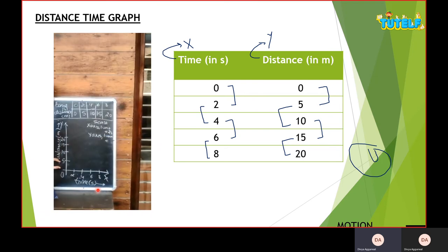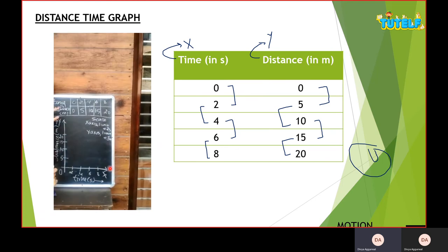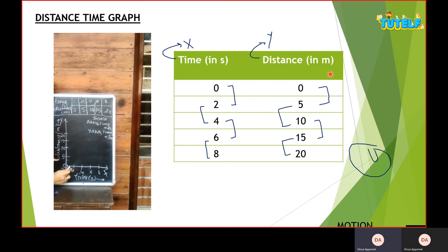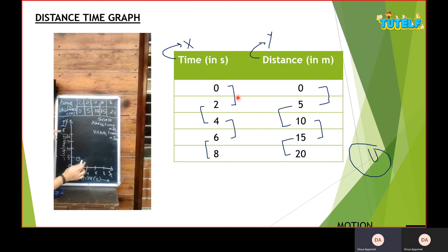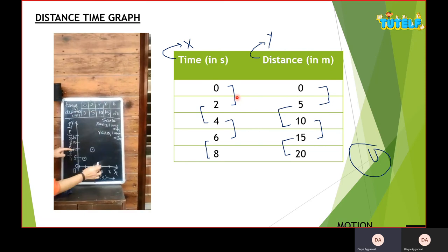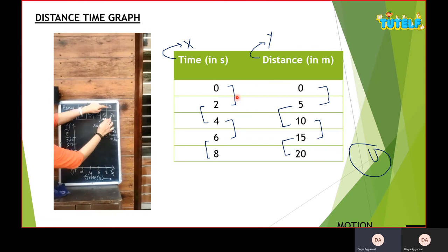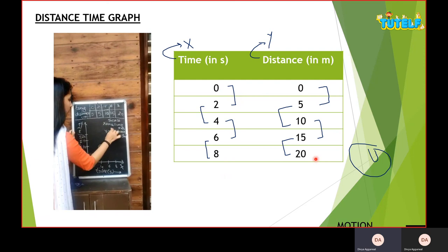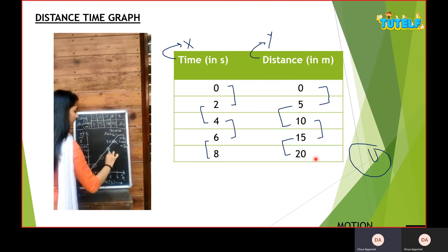Now I'll be plotting the points. So on screen you can see I have zero on x and zero on y, so zero zero. Then two five is two and five. Four ten would be four on x, ten on y, so four ten. Similarly six fifteen would be six on x and fifteen on y. And then finally time would be eight for x and twenty for y. I'll be joining all of this with a straight line. You should use scale for this.